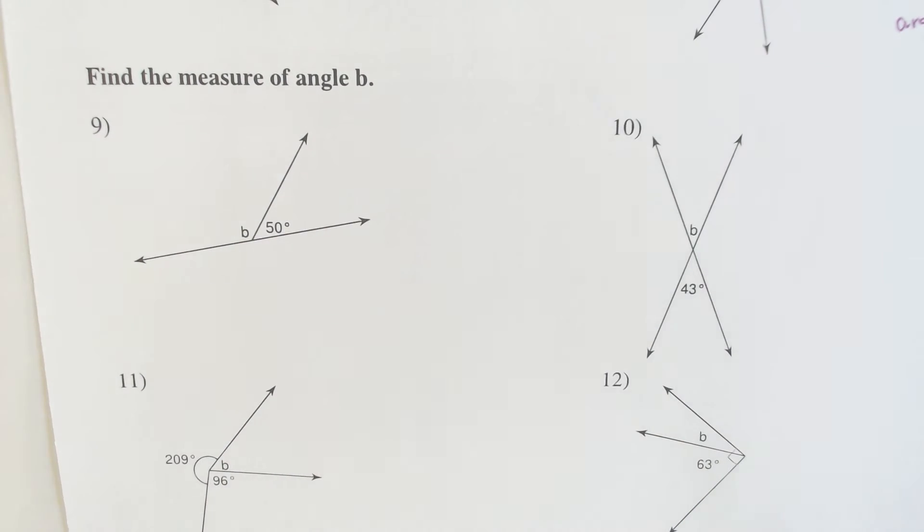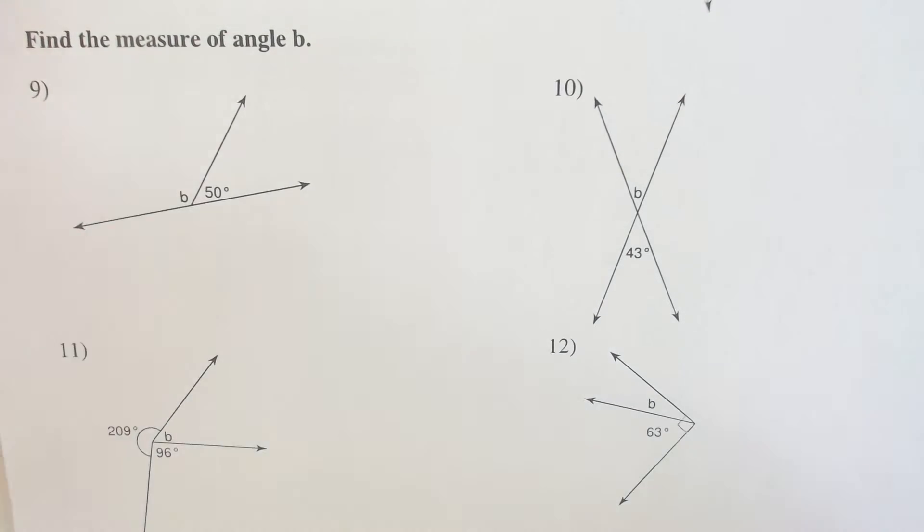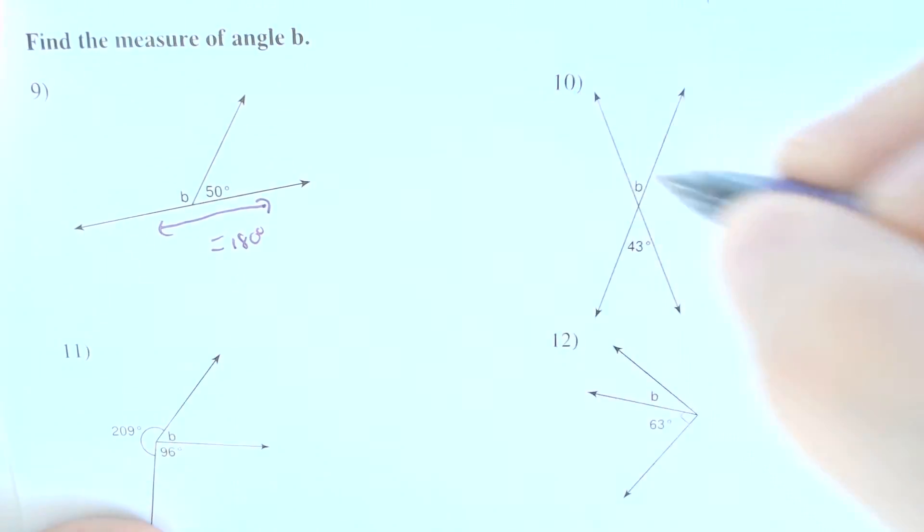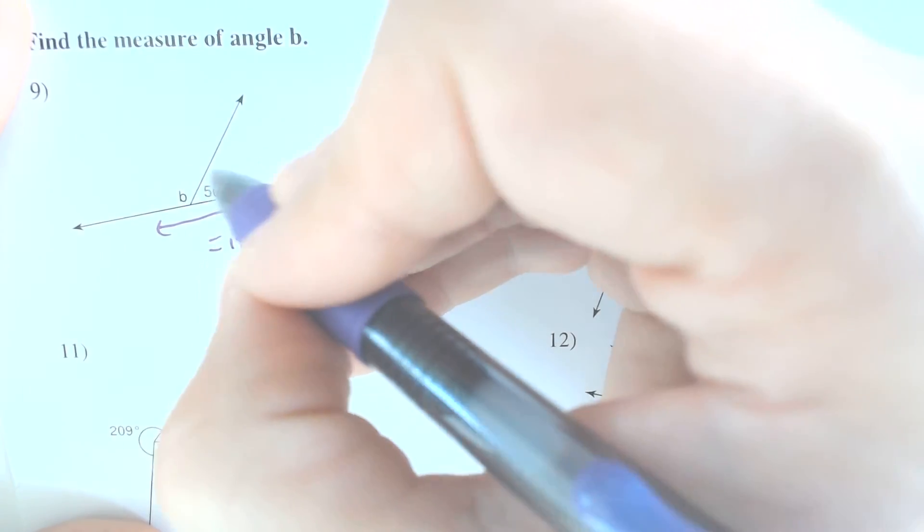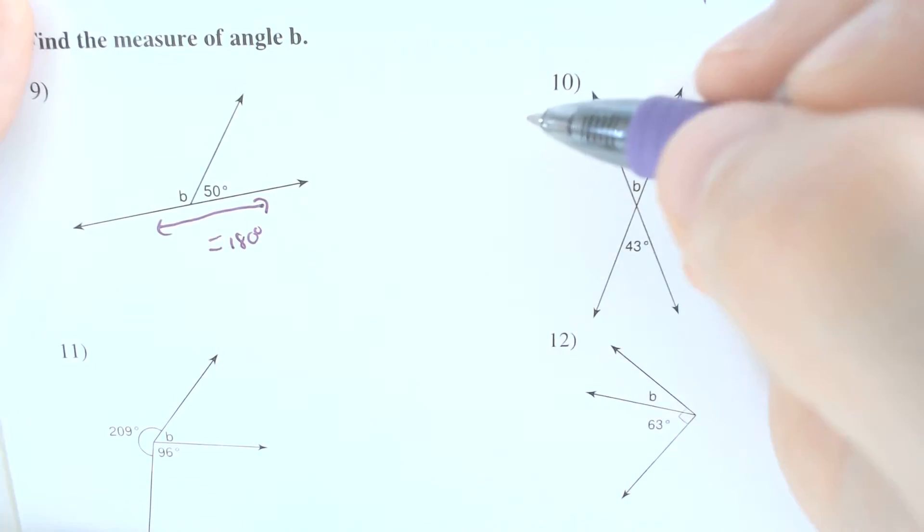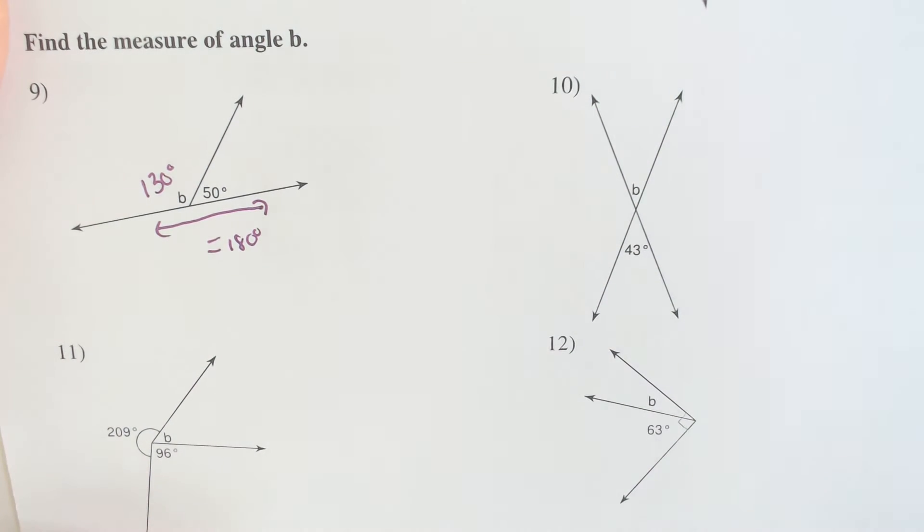A little bit of math with it. So identifying what it is determines what it would have to add to. So here, these two angles form a straight line. If they form a straight line, they have to add to equal 180 degrees. Well, we got 50 over here. 50 and what other number add to make 180? Well, that would be 130 degrees. So 130 and 50 make 180. We got our answer.